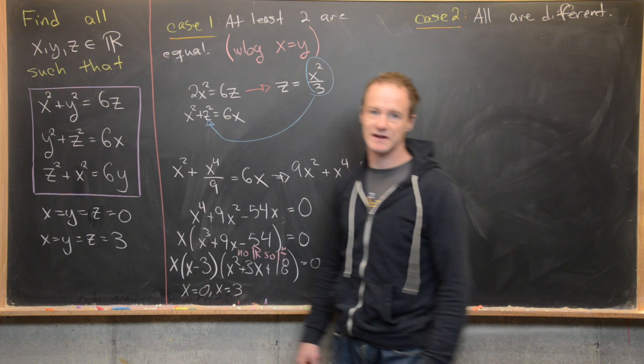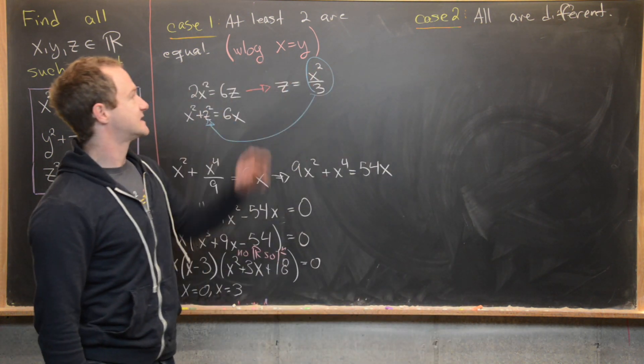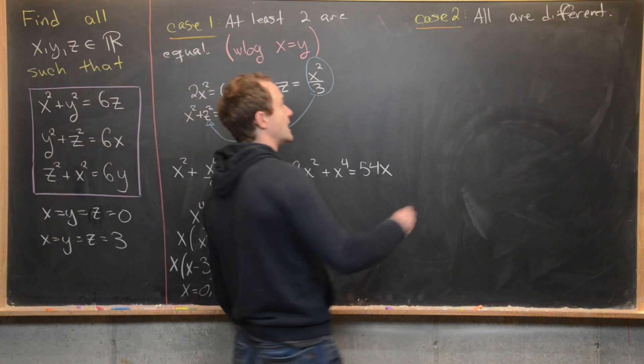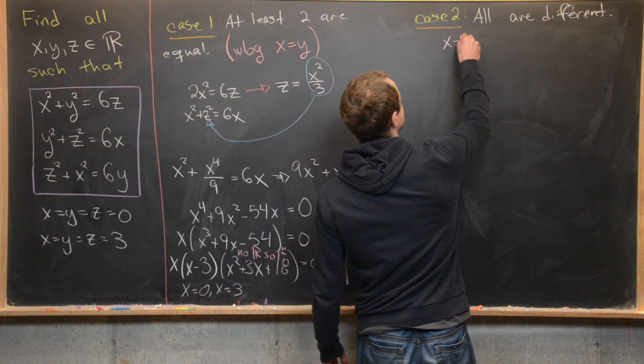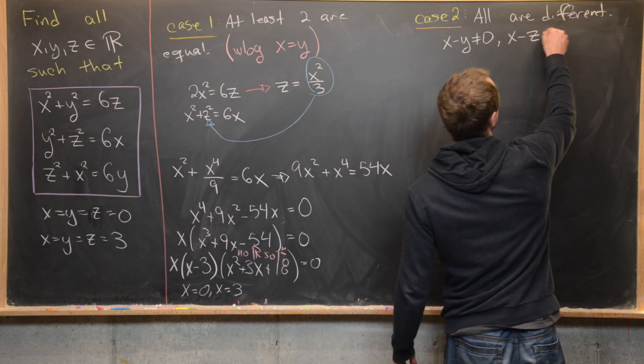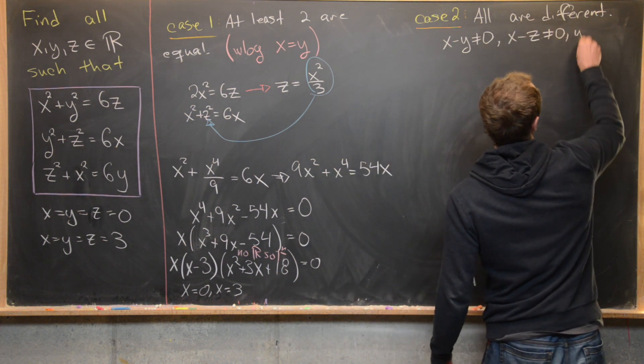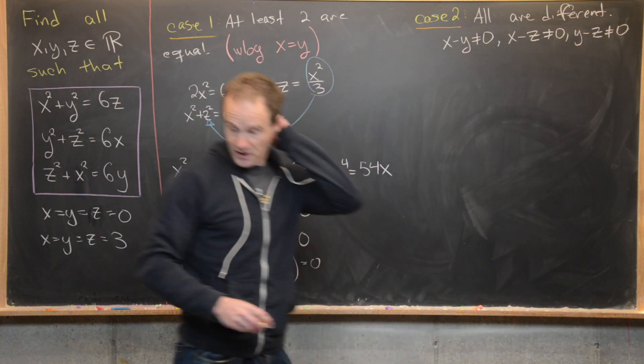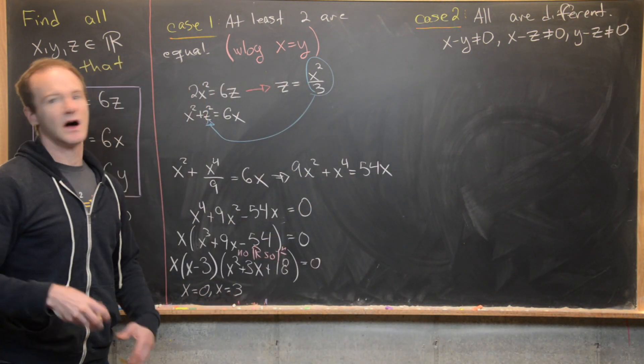Okay, so now let's jump into the second case, and the second case is all of the variables are different. So in other words, we know x - y is not equal to zero, we know x - z is not equal to zero, and we know y - z is also not equal to zero. So we've got that system of non-equations.